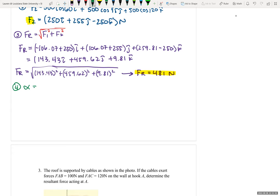Alpha is equal to cosine inverse FRX over FR. Beta is equal to cosine inverse FRY over FR. And gamma is equal to cosine inverse FRZ over FR.